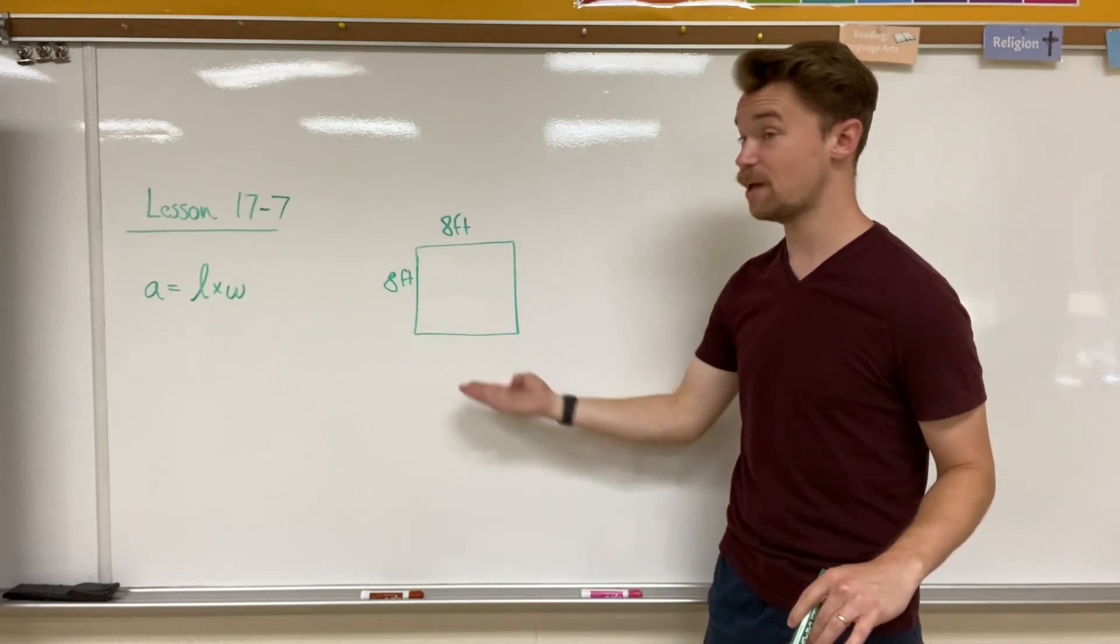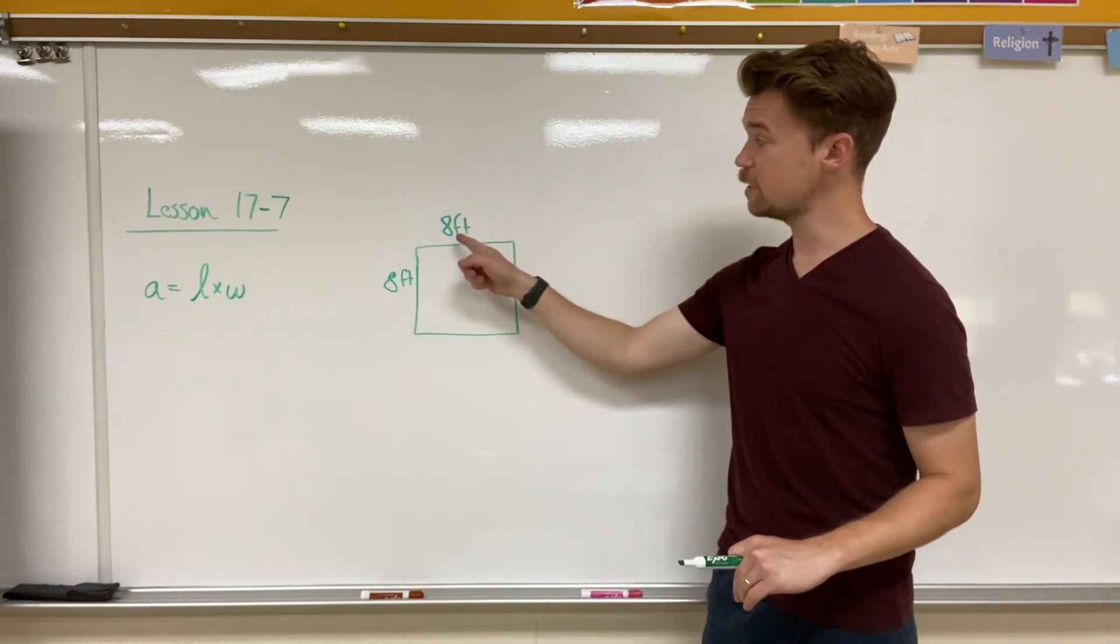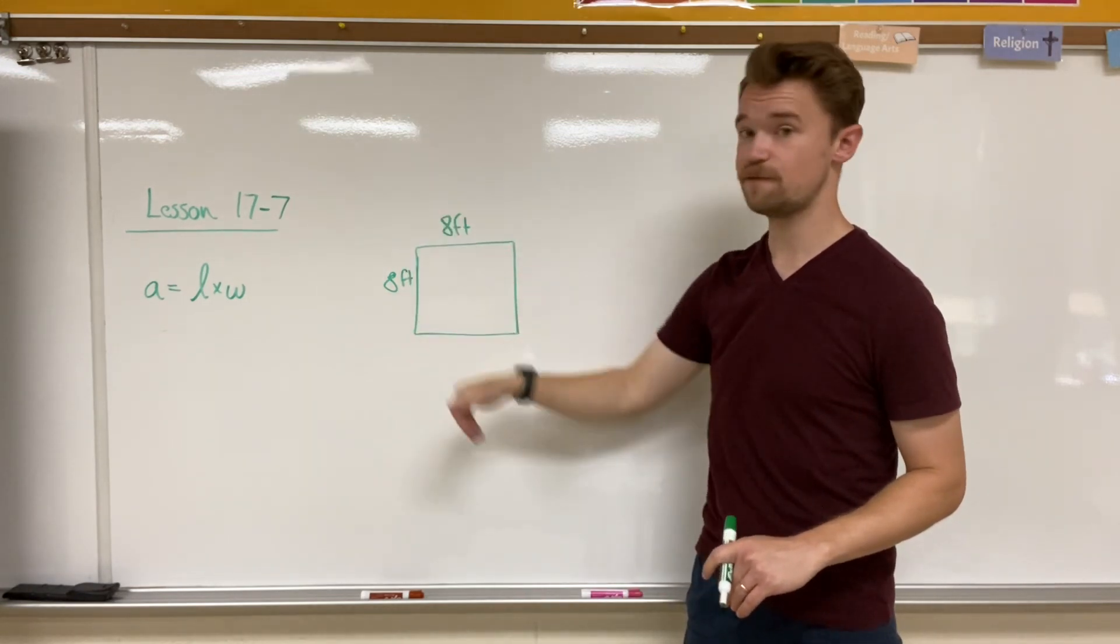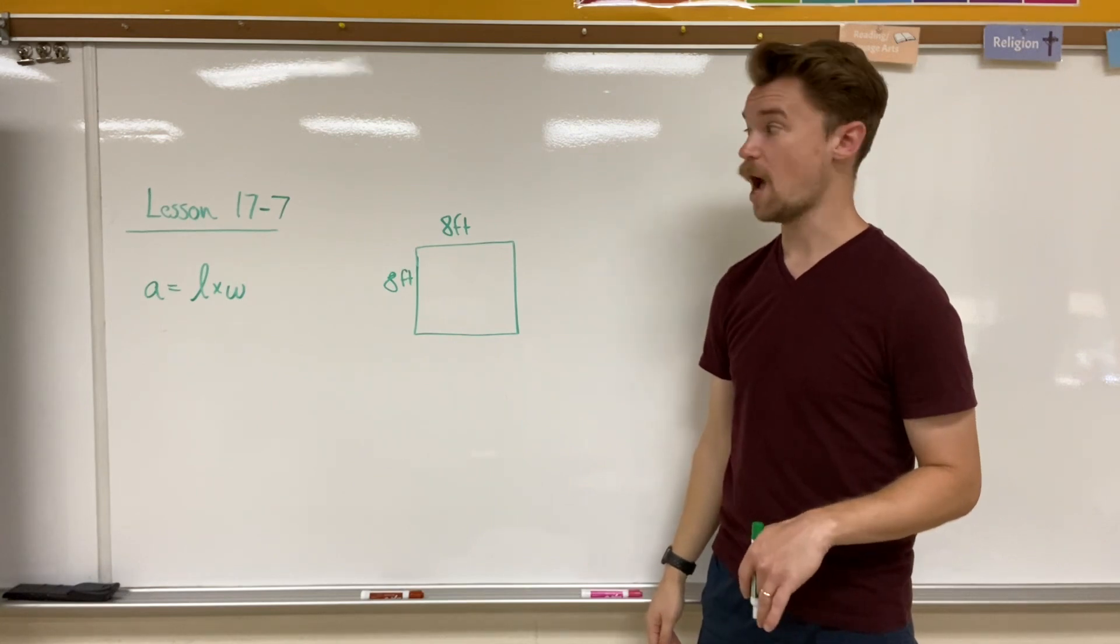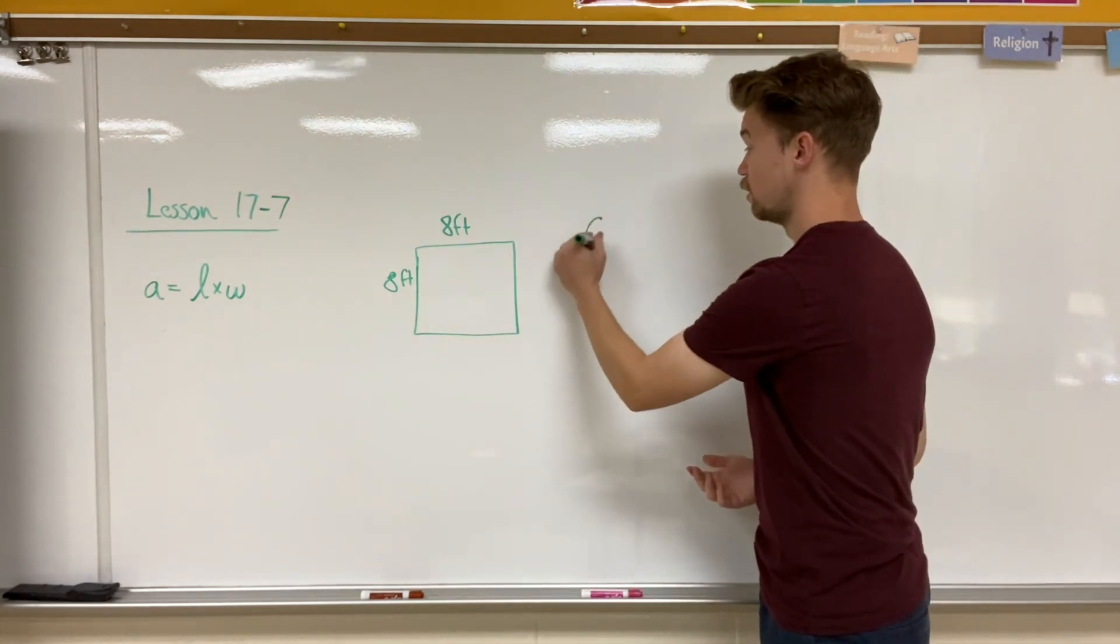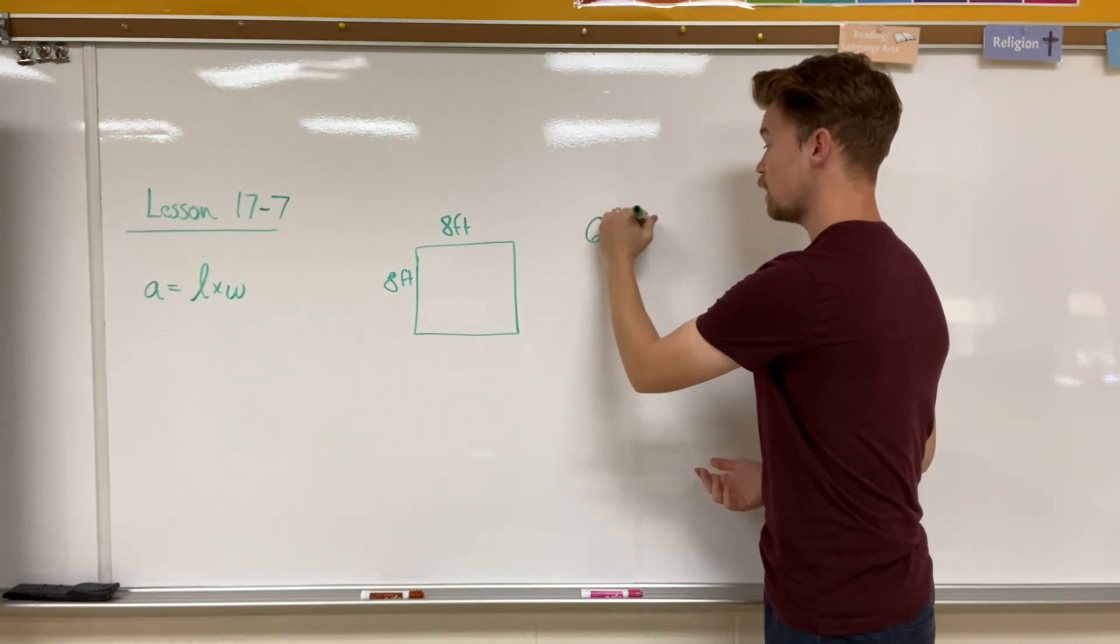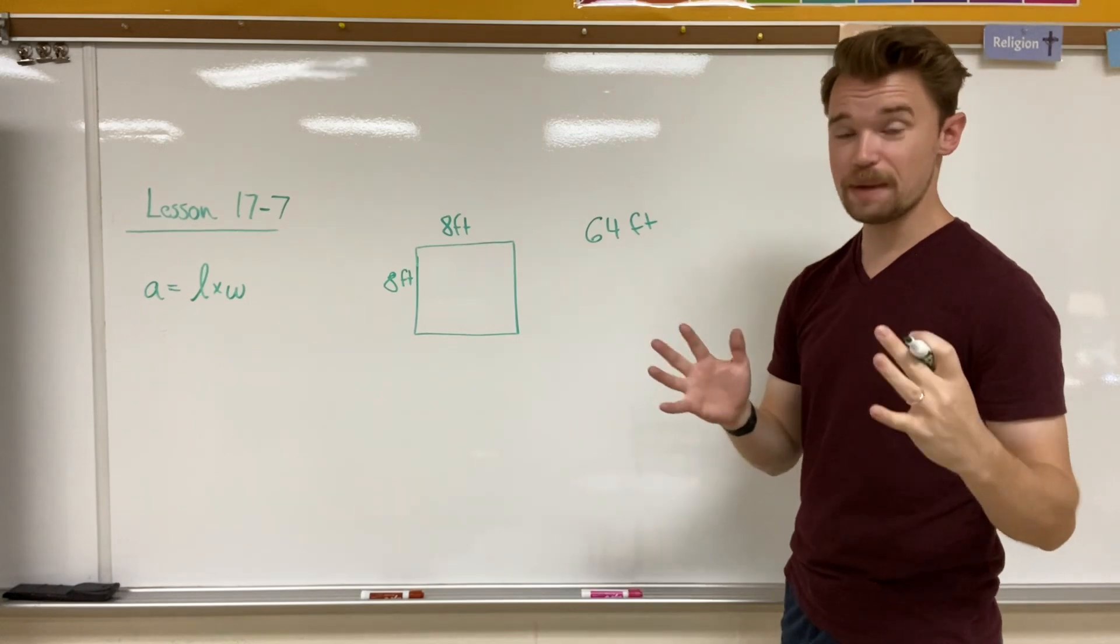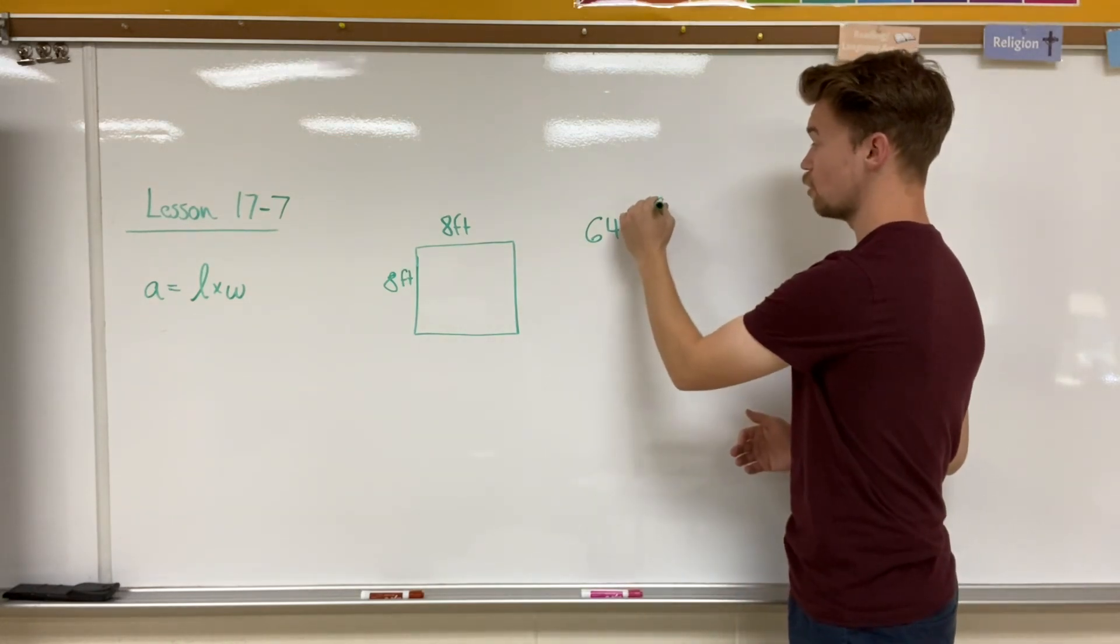So I have a quadrilateral here and it's eight foot by eight foot, meaning that this side is eight feet long and this side is eight feet long. Well, I'm going to be multiplying these two together and eight times eight is 64. So that would be 64 feet, and whenever we're working with area, we make sure that our area is something called squared.